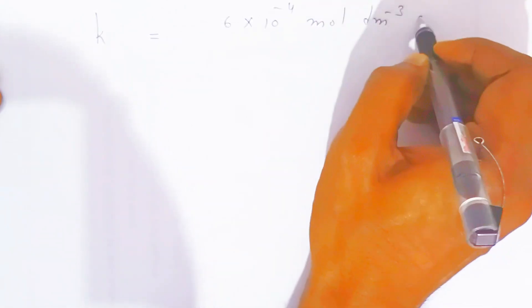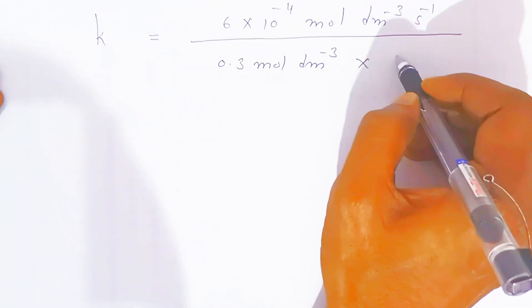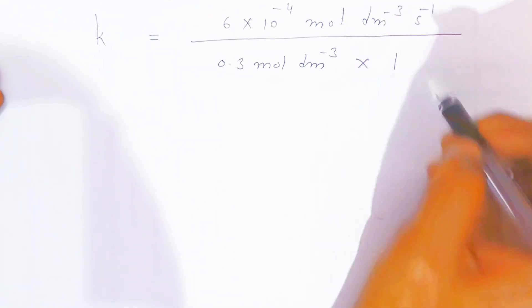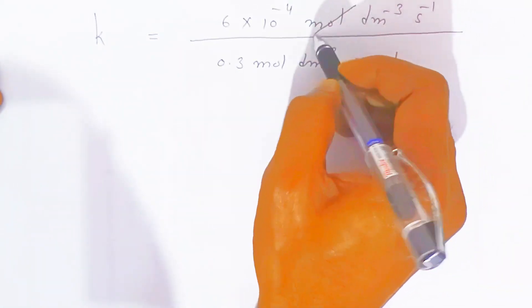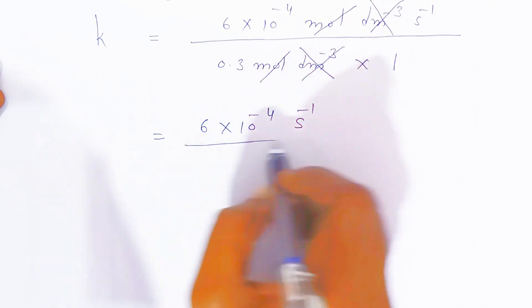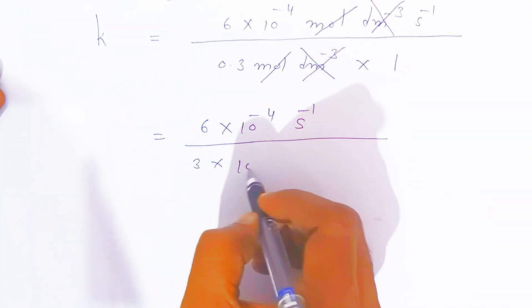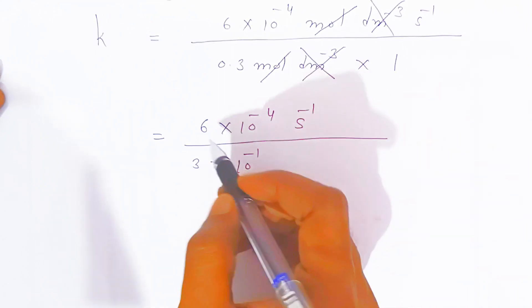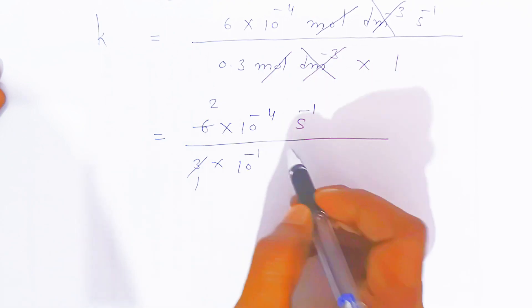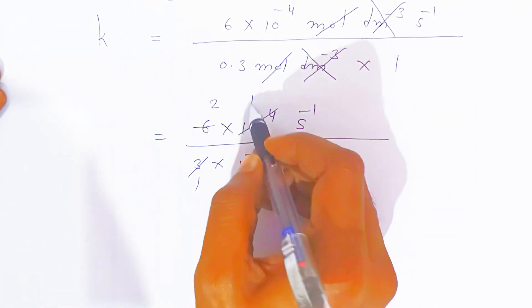So the rate of the reaction is divided by 0.3 mol per dm³, and anything raised to 0 is 1. The mol units cancel with mol, and dm³ cancels with dm³. This gives 6×10⁻⁴ per second divided by 0.3. Writing 0.3 as 3×10⁻¹, we divide: 6÷3 = 2, and 10⁻⁴ ÷ 10⁻¹ gives 10⁻³.